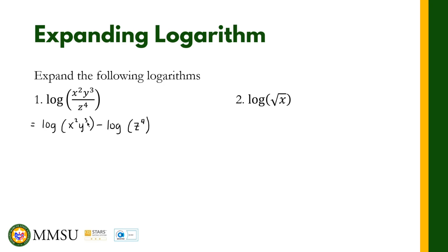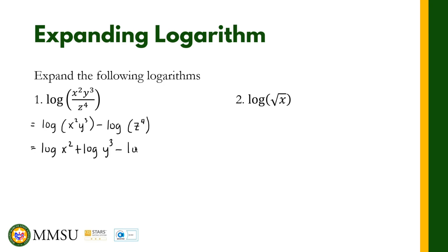Now we apply the rules to each individual logarithm. For the first logarithm — the logarithm of x squared y cubed — there is a product of x squared and y cubed, so we apply the product rule. The product rule states that we can separate the two logarithms using addition. So this becomes logarithm of x squared plus the logarithm of y cubed.